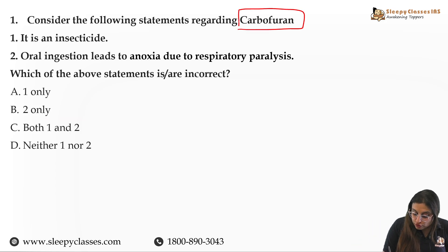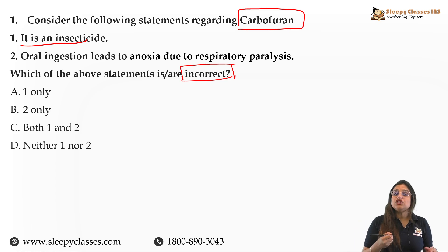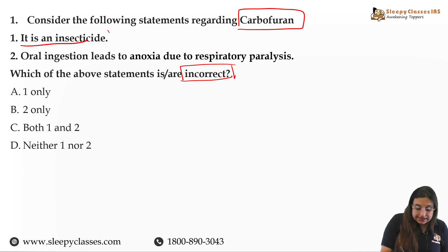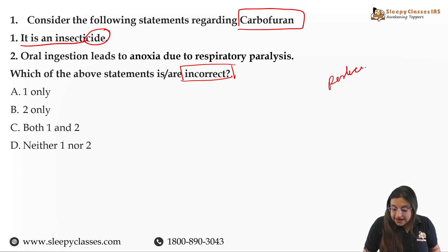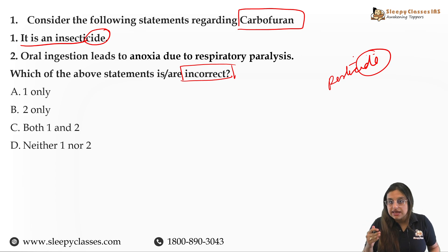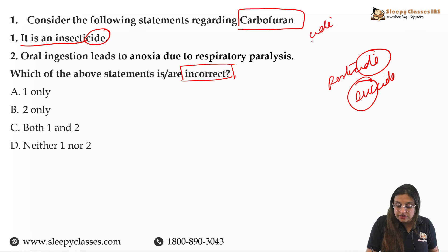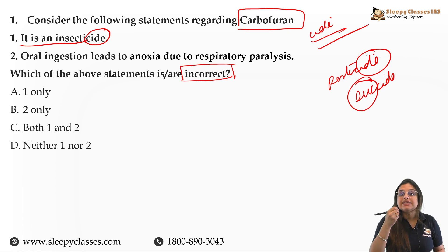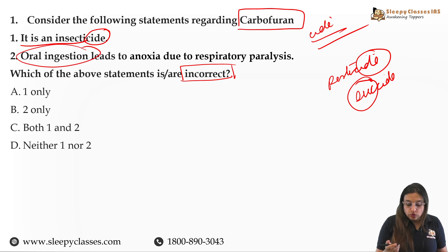This question is regarding Carbofuran. You have been asked which statement is incorrect. The first statement is that it is an insecticide — whenever you see the suffix '-cide', it means insecticide. The second statement is about oral ingestion: if you eat or orally ingest it, it can lead to anoxia.